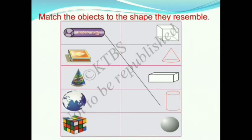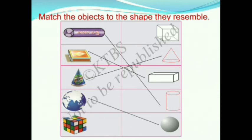Next, the matchbox resembles the shape of a cuboid, so we match it with cuboid. Then the birthday cap looks like a cone, so we match it with cone. The Earth looks like a sphere, so we match it with sphere. Finally, the Rubik's Cube looks like a cube, so we match it with cube.